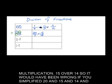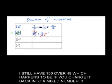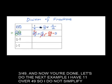So it would have been wrong if you simplified 20 and 15 and 14 and 7 at the beginning. Now, before you do this, divide everything by 2. 20 by 2 is 10, 14 by 2 is 7. I still have 150 over 49, which happens to be, if you change it back to a mixed number, 3 and 3/49. And now you're done.